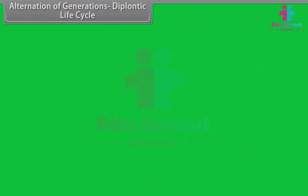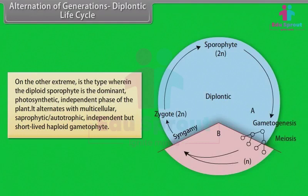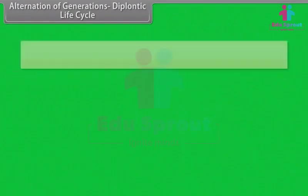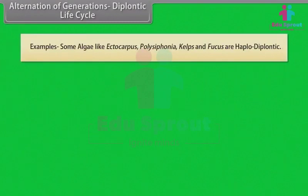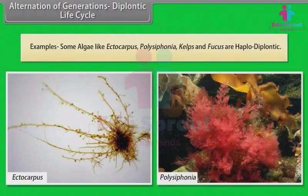On the other extreme is the diplontic life cycle, wherein the diploid sporophyte is the dominant photosynthetic independent phase of the plant. It alternates with a multicellular, autotrophic, independent but short-lived haploid gametophyte. Examples include some algae like Ectocarpus, Polysiphonia, kelps, and Fucus.